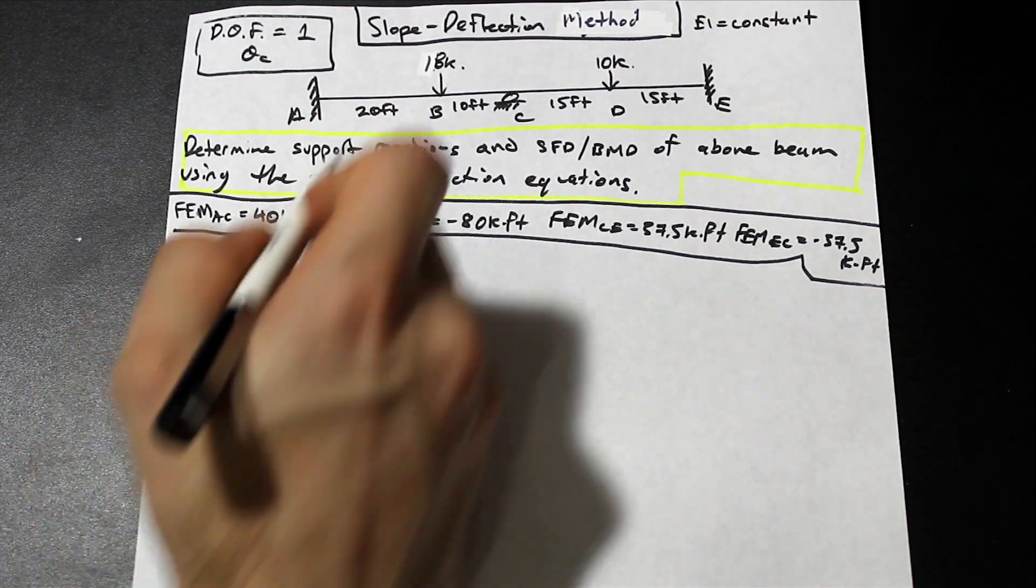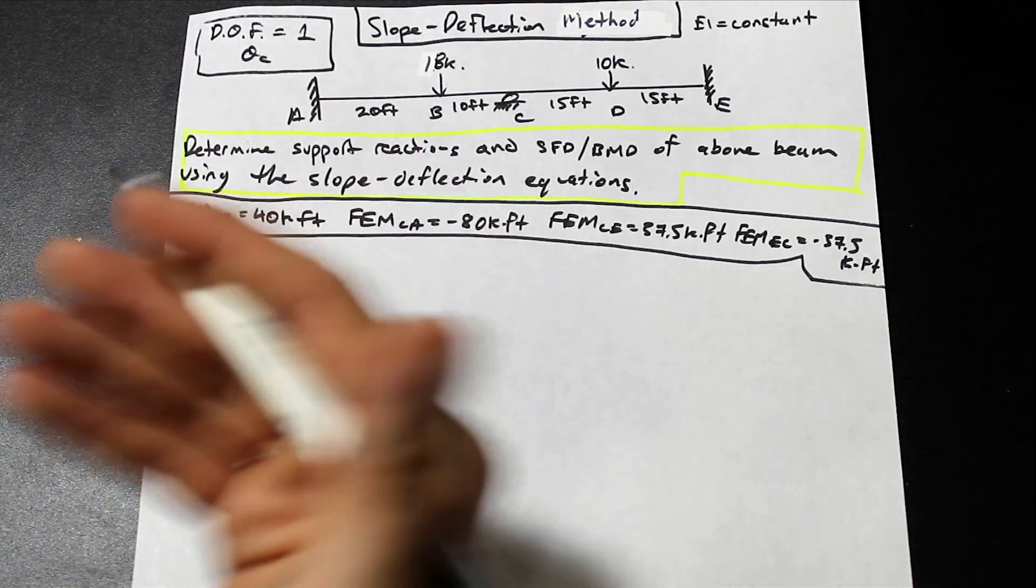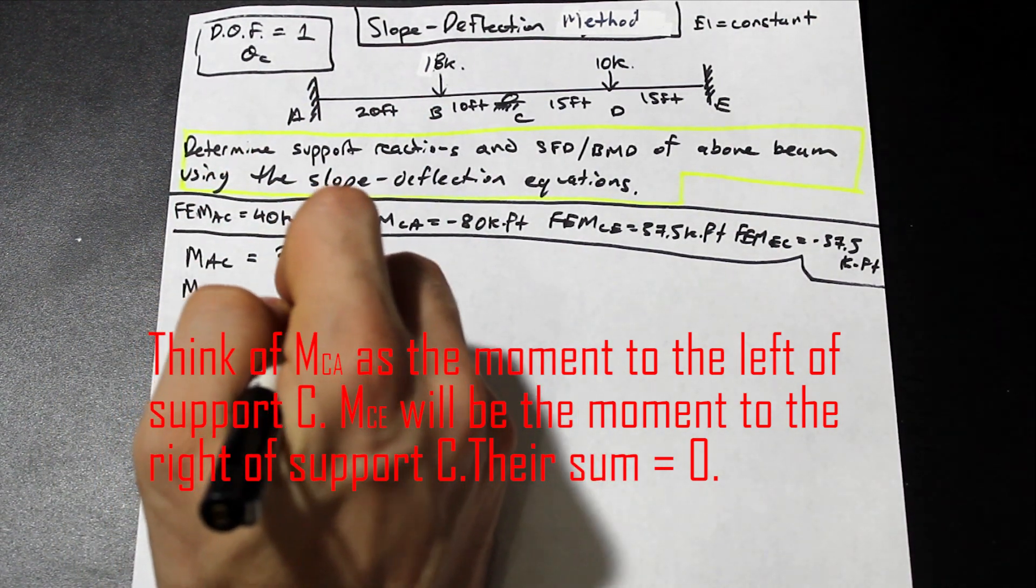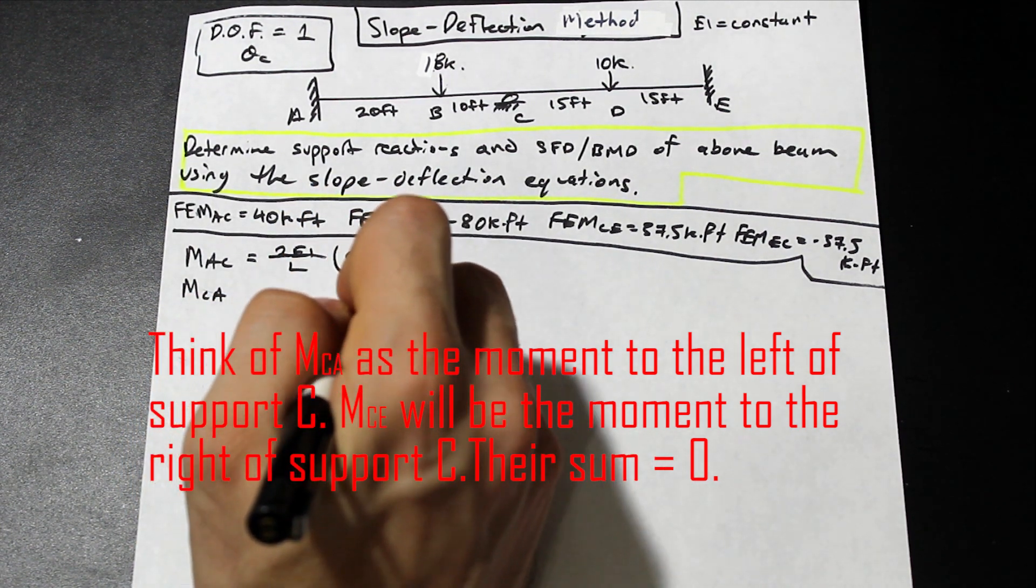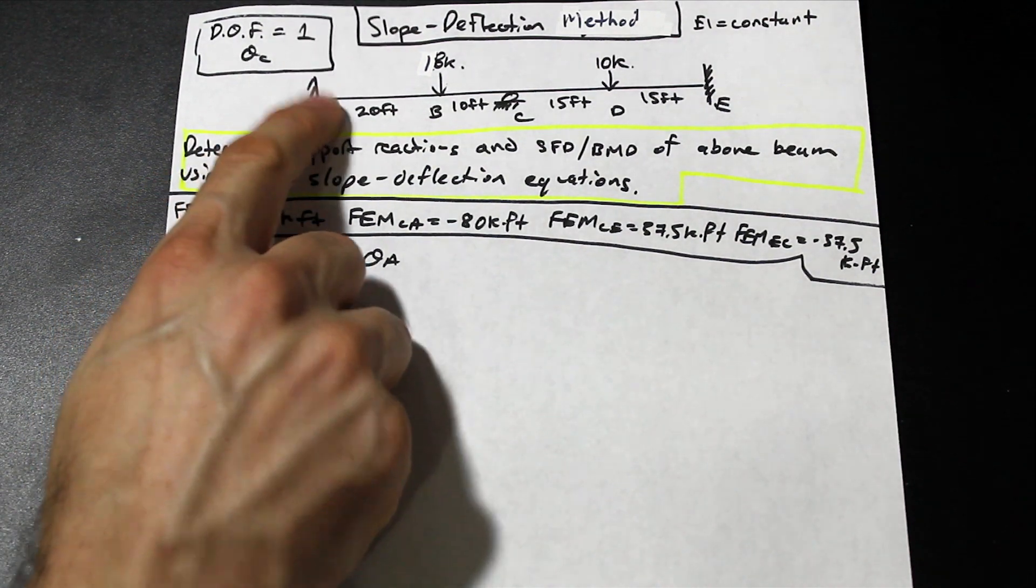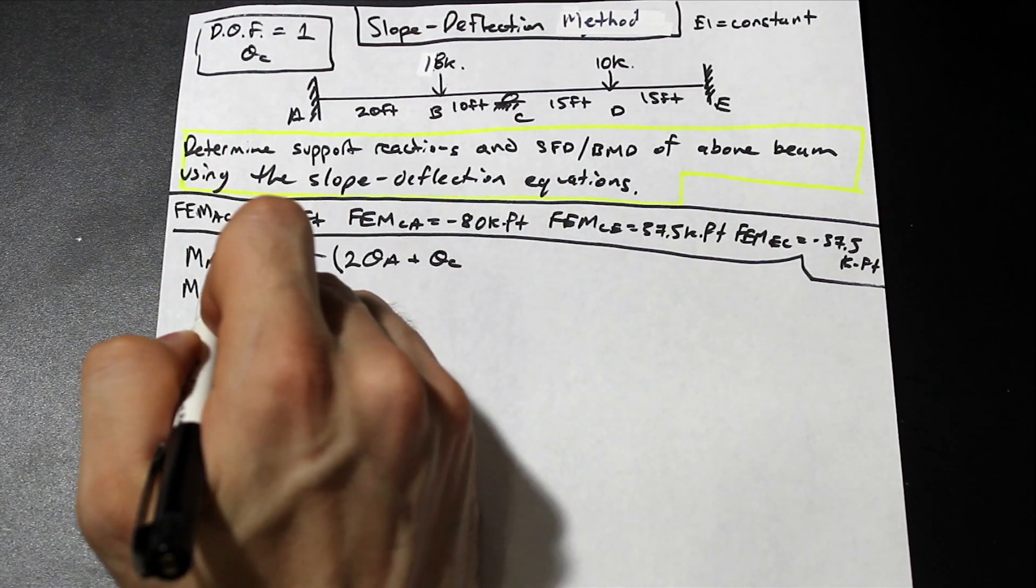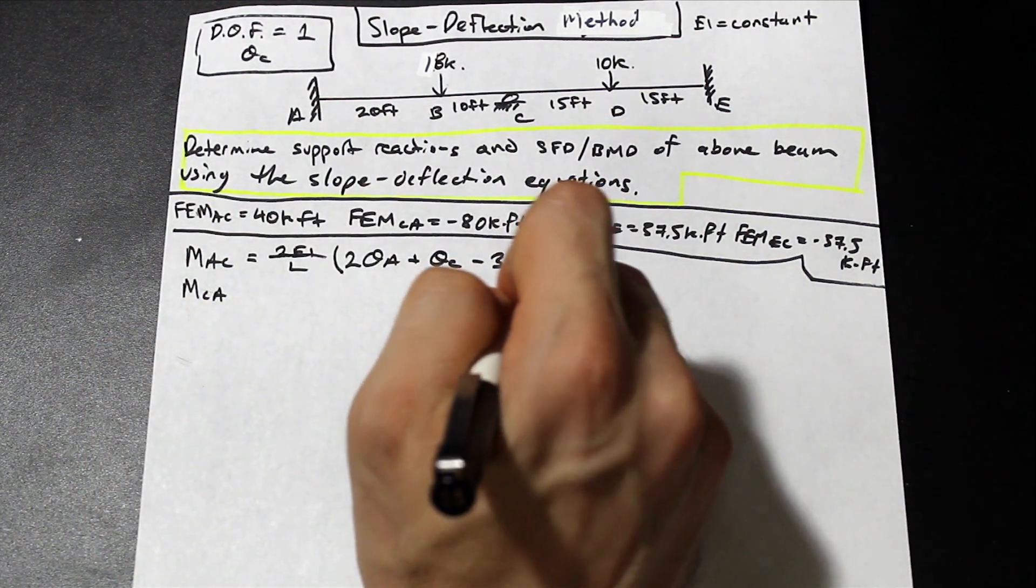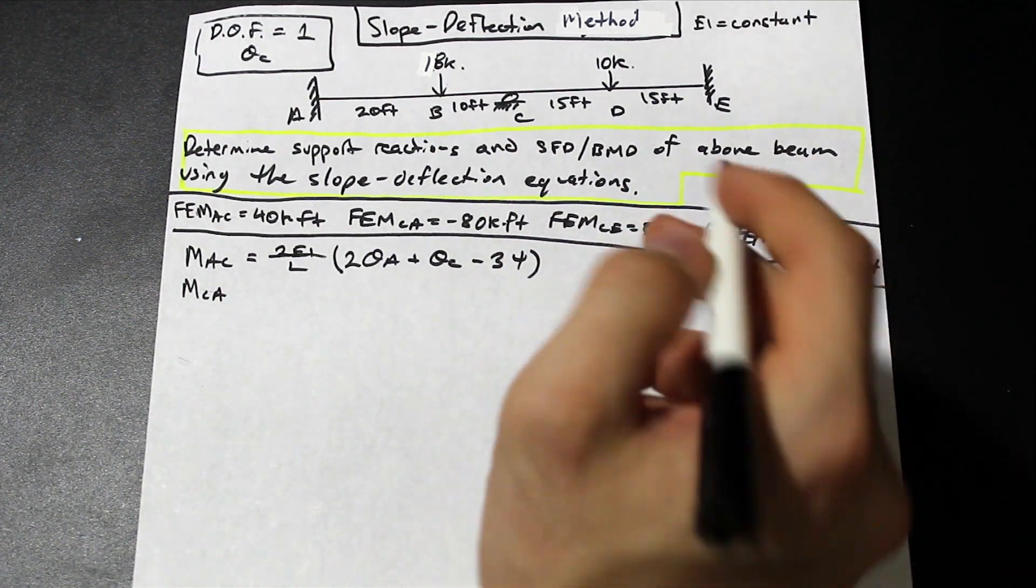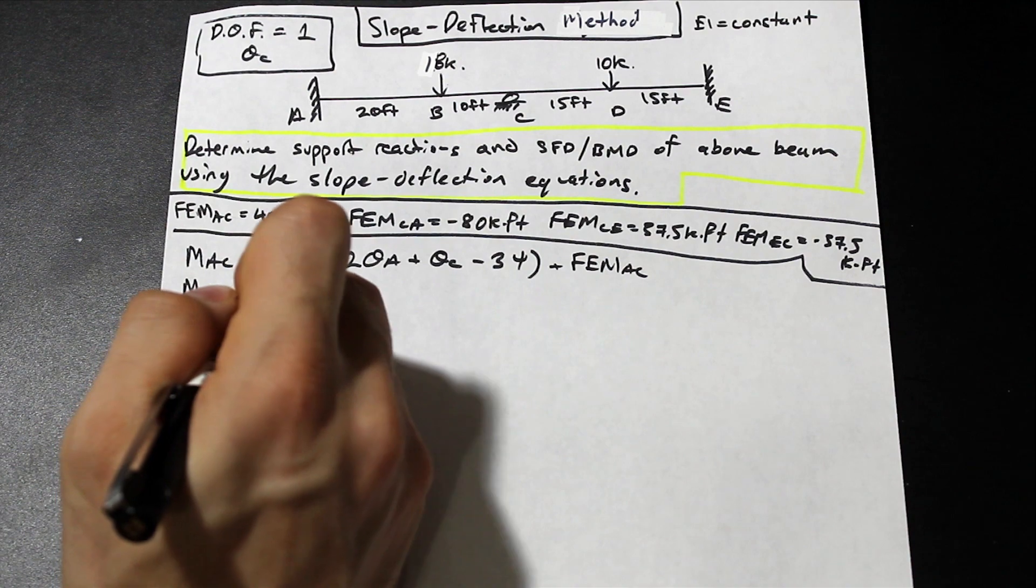So we go from section to section, from support to support, and whichever subscript letter we use first, so MA in this case, we're going to consider this the moment at A. So this would be considered the moment at C. So we have the moment at A is equal to, and this is just a formula, so you don't really need to remember this. So we have 2EI over L times 2θA, so wherever we are evaluating the moment at, so remember I said MA, so we're at A, and we're looking at the moment at A, we're going to put a 2 in front of the rotation at that point. So we have 2θA, plus θC, so the θ at the opposite end where the second subscript is, minus 3ψ, it's just a Greek letter there. That actually refers to a settlement value, but we're not doing settlement now, so we're going to ignore that for now. I'll do that in another video, so come back for that. And we're going to add the fixed end moment of AC. So whatever the subscript is here, just add it to the FEM.